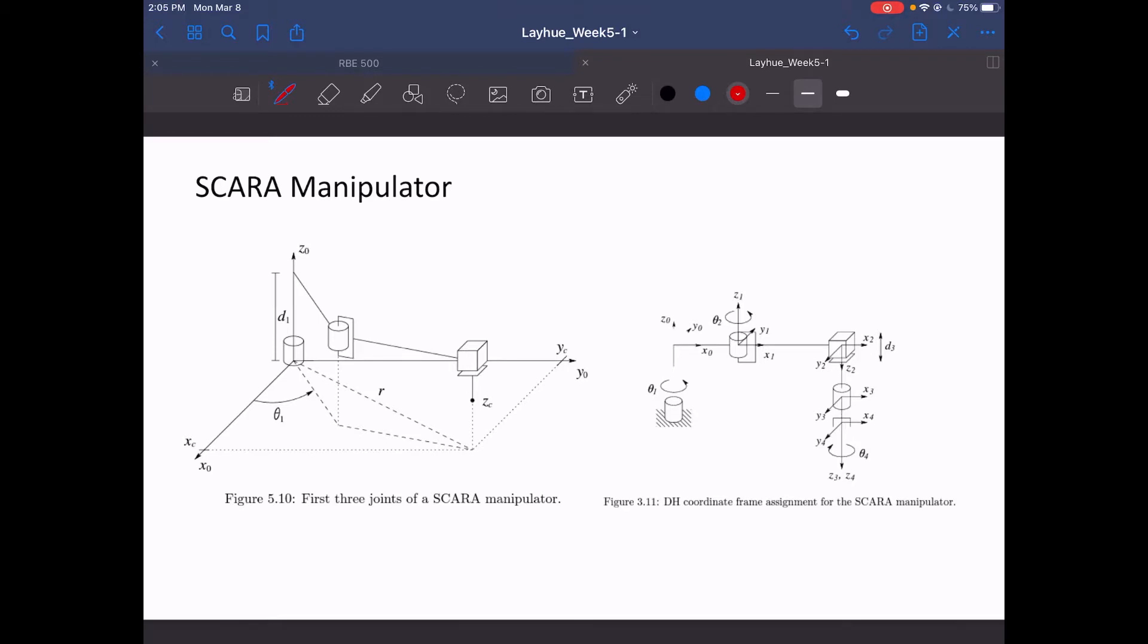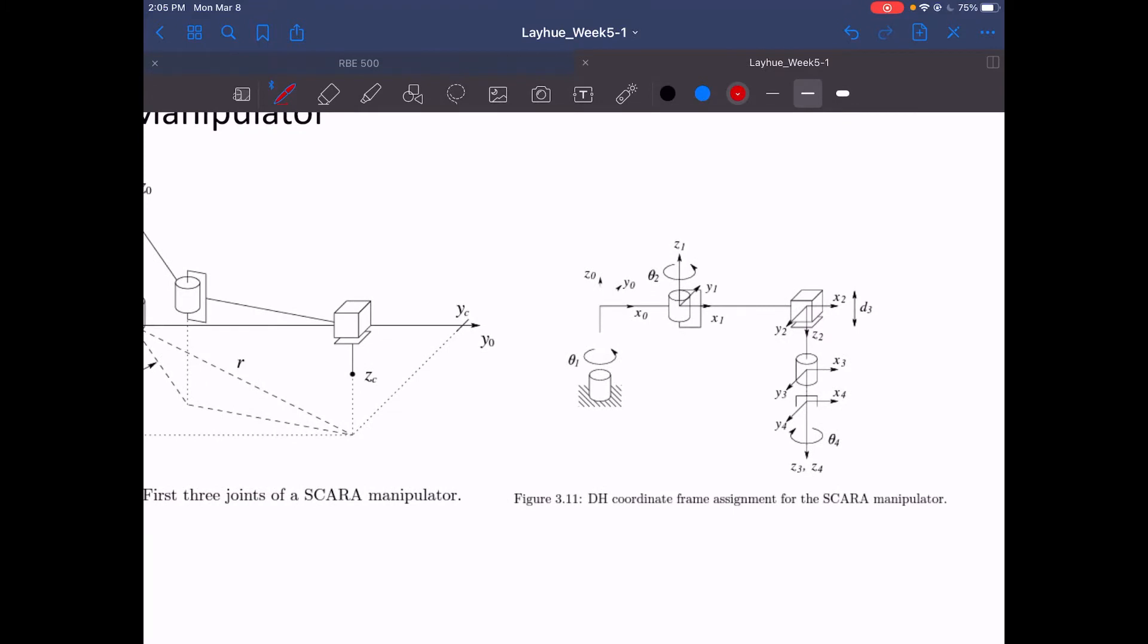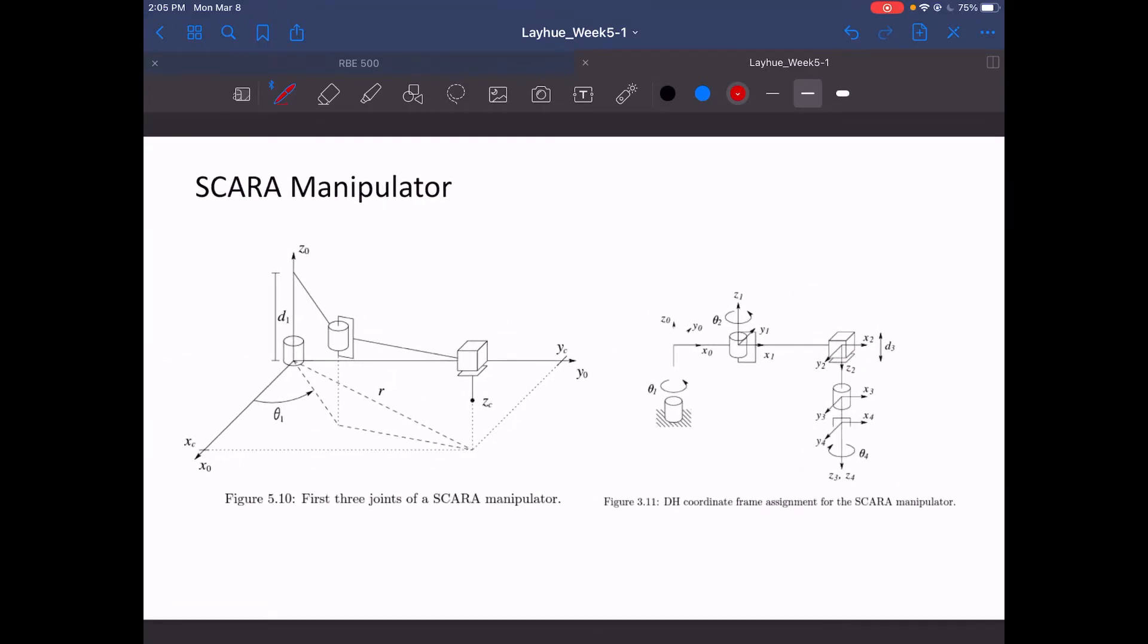But figure 311 is from a previous chapter. I like that it shows the end effector in a different frame, showing the attachment to the revolute joint. One thing to note is that the revolute joint here does not affect the overall position of the end effector, but it does affect the orientation. I wanted to show that because it shows the additional joints. This one just shows the three.